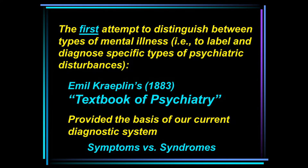The first attempt to distinguish between different types of mental illness was Emile Kraepelin's 1883 book, Textbook of Psychiatry. He was attempting to label and diagnose specific types of psychiatric disturbances. Kraepelin had observed that certain symptoms of mental illness tend to be clustered together in large populations, and he referred to these clusters of symptoms as syndromes.